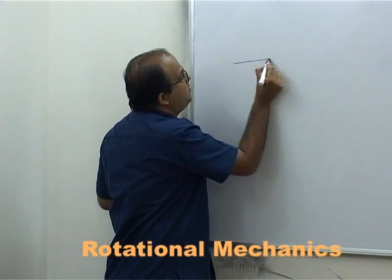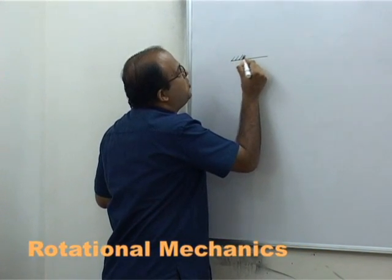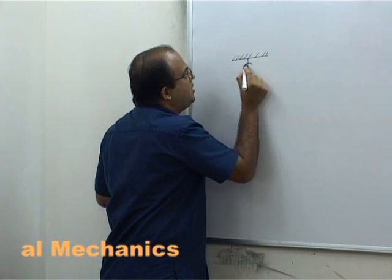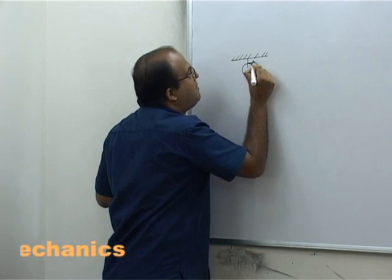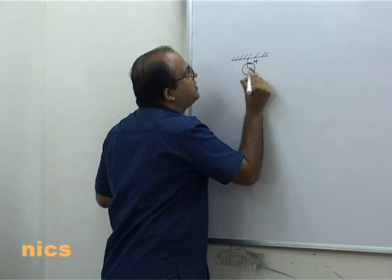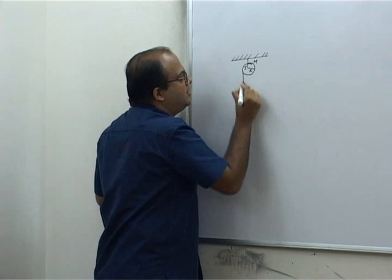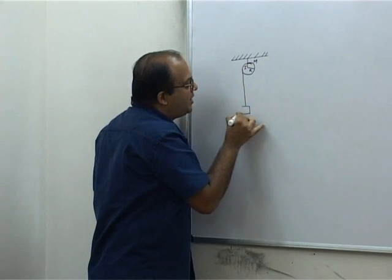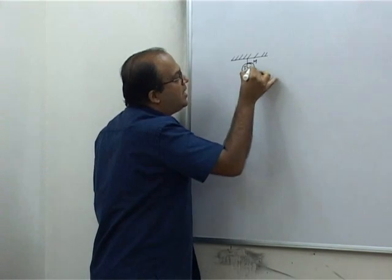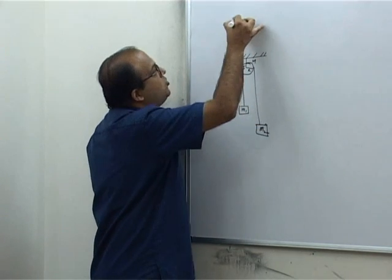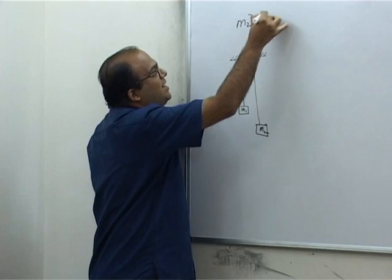Now look at a problem where the pulley is having some mass. So this is the pulley of mass capital M, radius capital R, moment of inertia capital I. A mass M1 is hanging here and a mass M2 is hanging here. Let us assume that M2 is greater than M1.